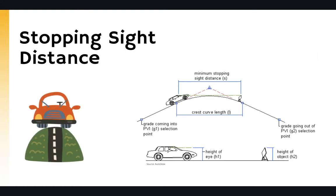When designing a vertical curve we also need to check different stopping sight distance criteria to ensure the curve provides a safe stopping distance. To do that we consider the height of the driver's eye, h1, as well as the height of the object on the road ahead, h2. The minimum stopping sight distance is the safe distance over which the driver can see an object and have enough time to stop the vehicle before hitting it.